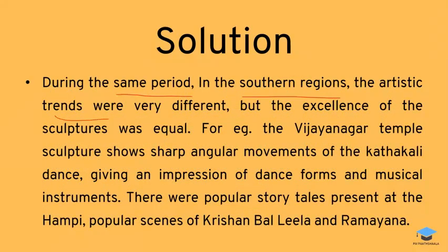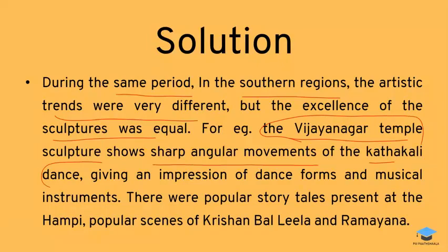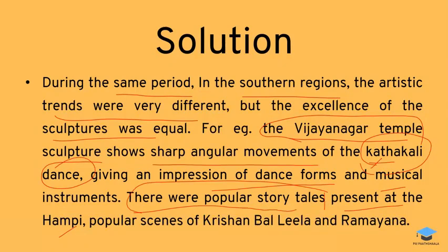If you go to the southern region, the artistic trends were very different but equally excellent. For example, if you go to the Vijayanagar temple, there was a sharp angular movement depicting Kathakali dance. This is an impression that there were dance forms and musical instruments played there. Popular stories were also present at Hampi — scenes of Krishna, Balila, and Ramayana. Through temple sculptures we know all that was happening in society.